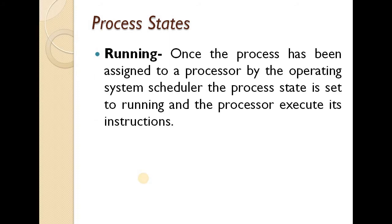The third state is the running state. Once the process has been assigned to a processor by the operating system scheduler, the process is set to running and the processor executes its instructions. When a process is inside the CPU and instructions are being executed, we say that the process is in the running state.